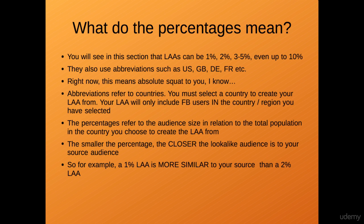The abbreviations are straightforward — these are basically the country that you create your lookalike audience in. When you're creating a lookalike audience you have to select at least one location, one country or trade region. Once you've selected this country it will be referred to using an abbreviation — that's all those abbreviations are.